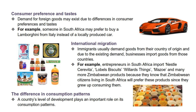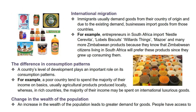Next is international migration. Immigrants usually demand goods from their country of origin and due to the existing demand, businesses import goods from those countries. For example, entrepreneurs in South Africa import Nestle CeraVita, Lobel's Biscuits, Willard's Things, Mezzo and many more Zimbabwean products because they know that Zimbabwean citizens living in South Africa will prefer these products since they grew up consuming them.